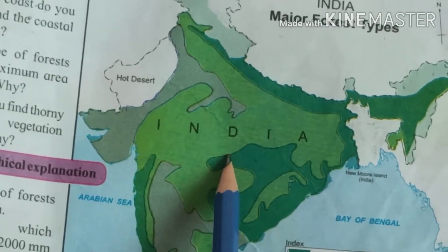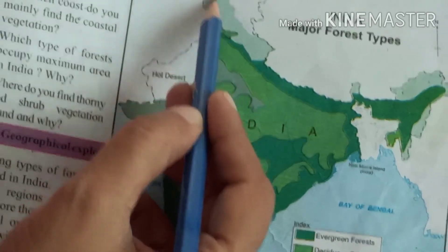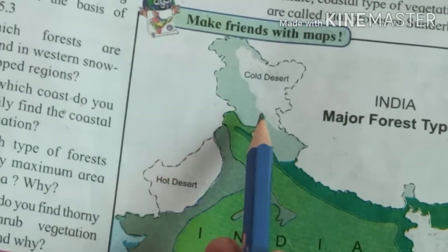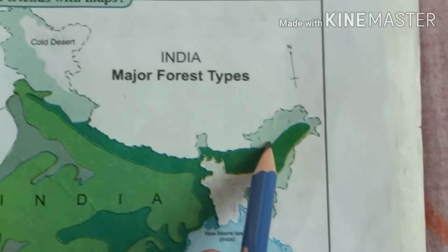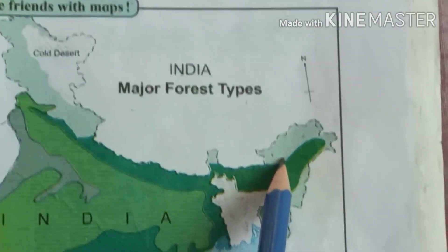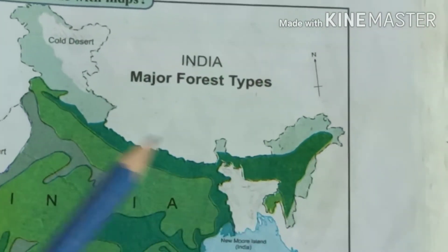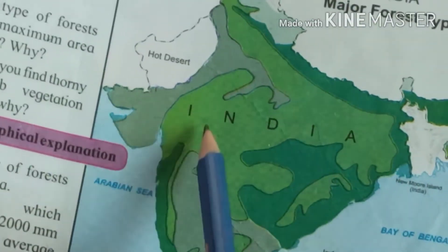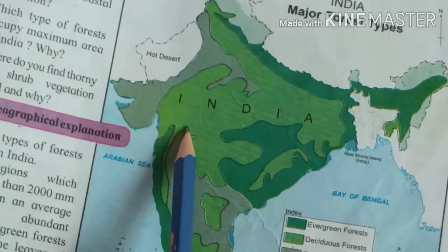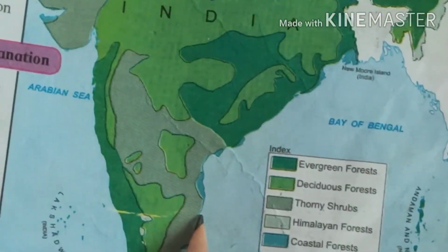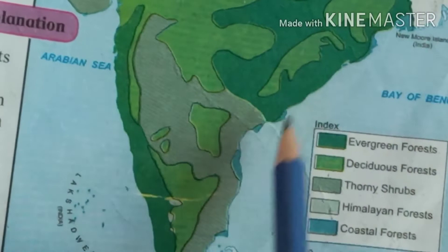The neon color shows the Himalayan mountains, which you can also observe in Arunachal Pradesh. The light green color here represents thorny shrubs, and the coastal forest is visible along the eastern coastal regions of India.